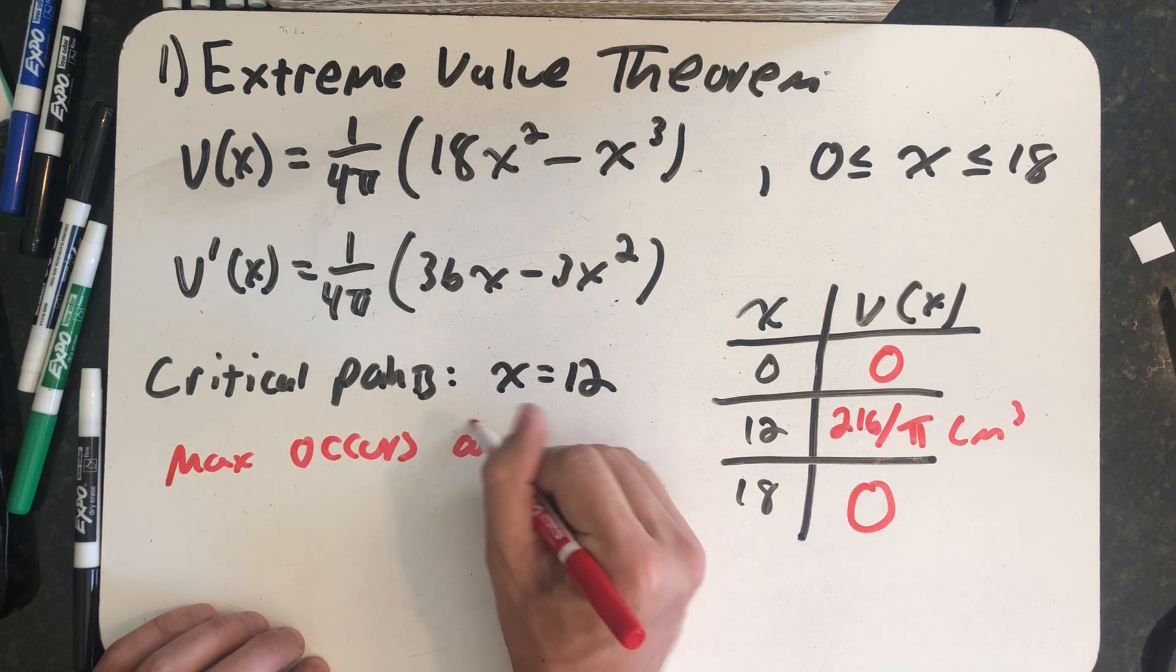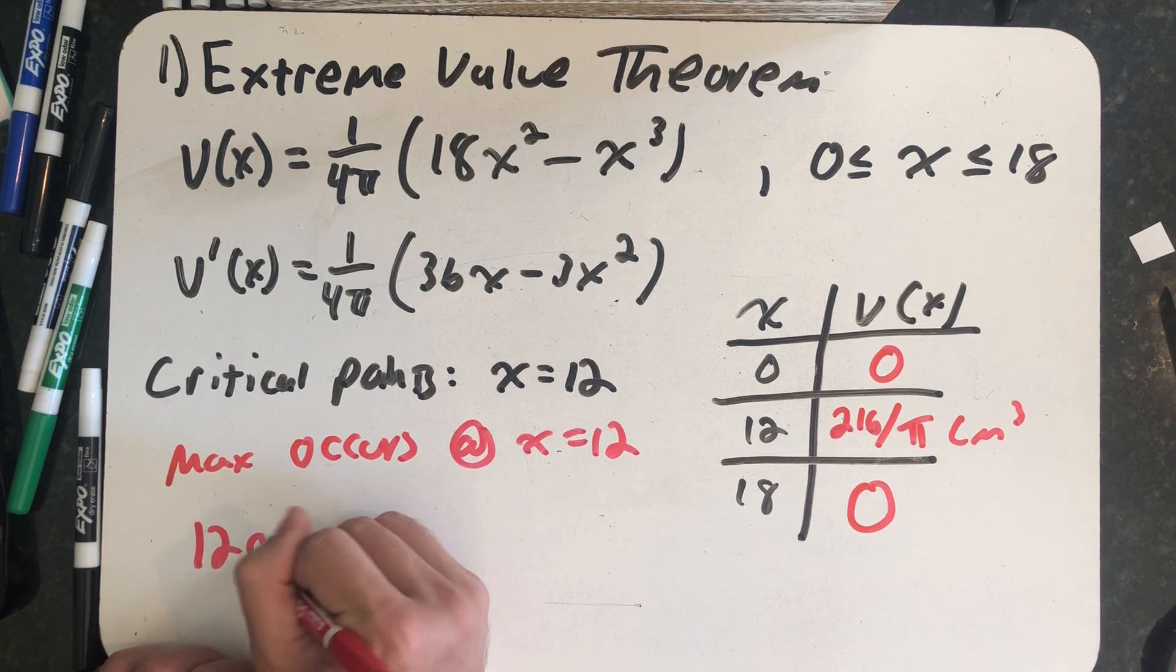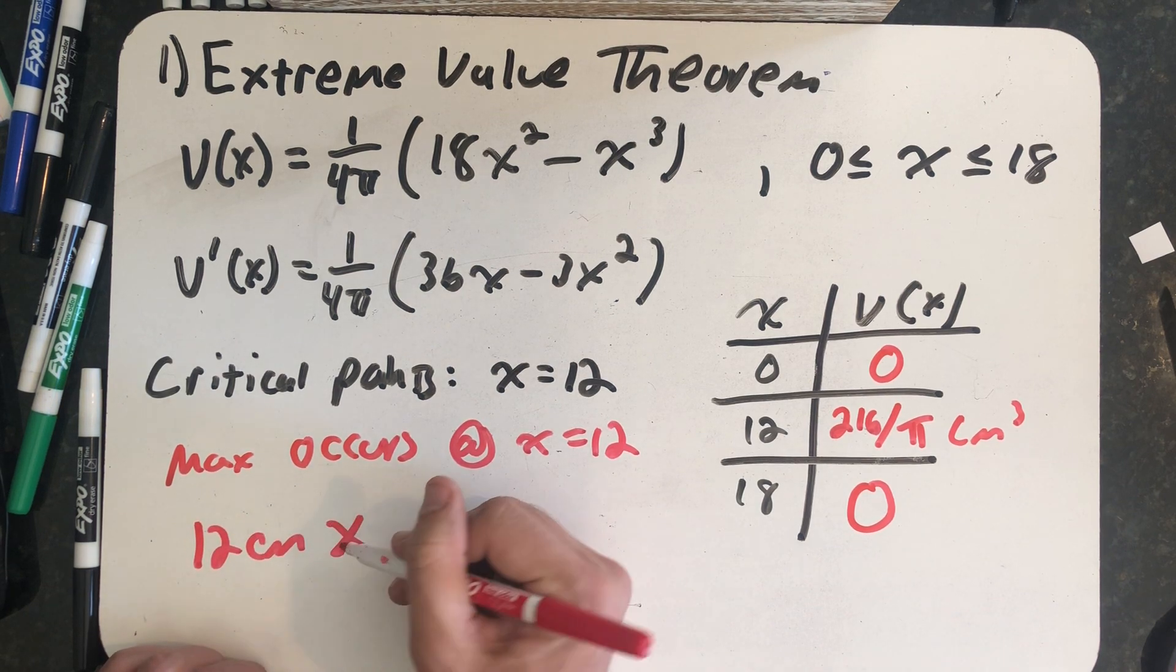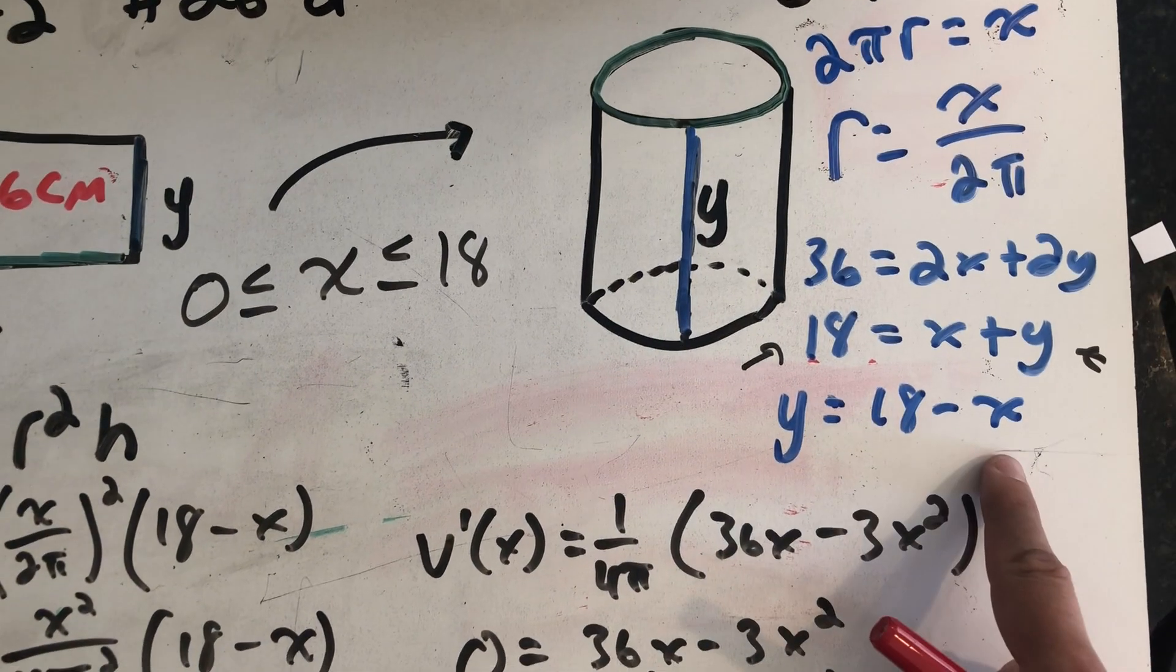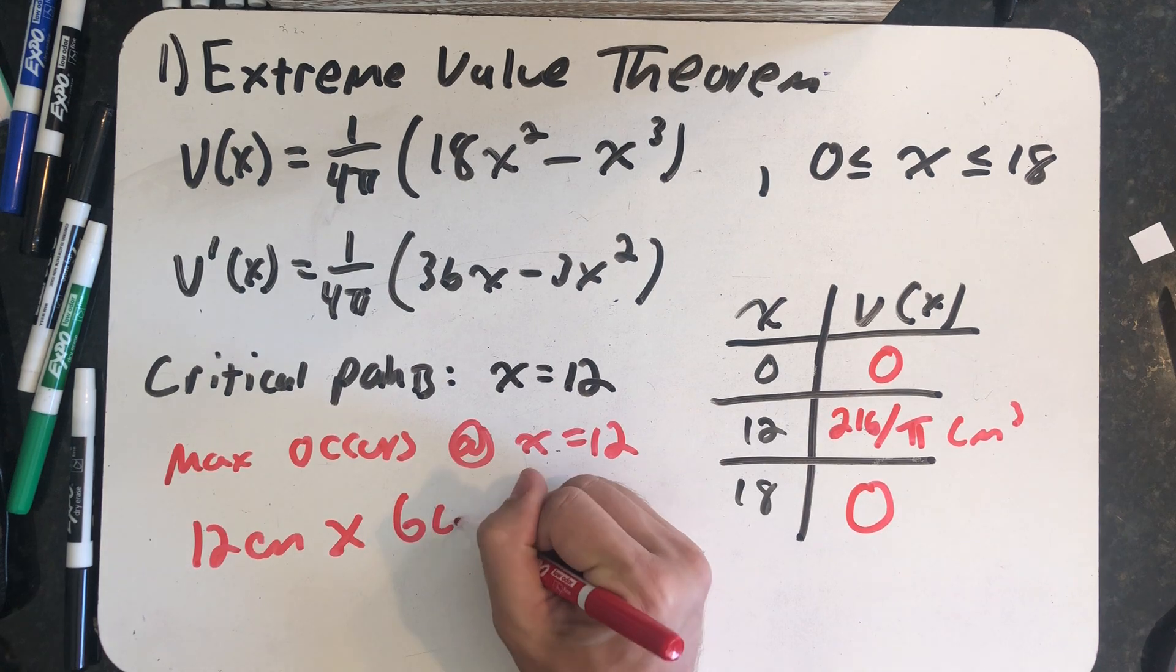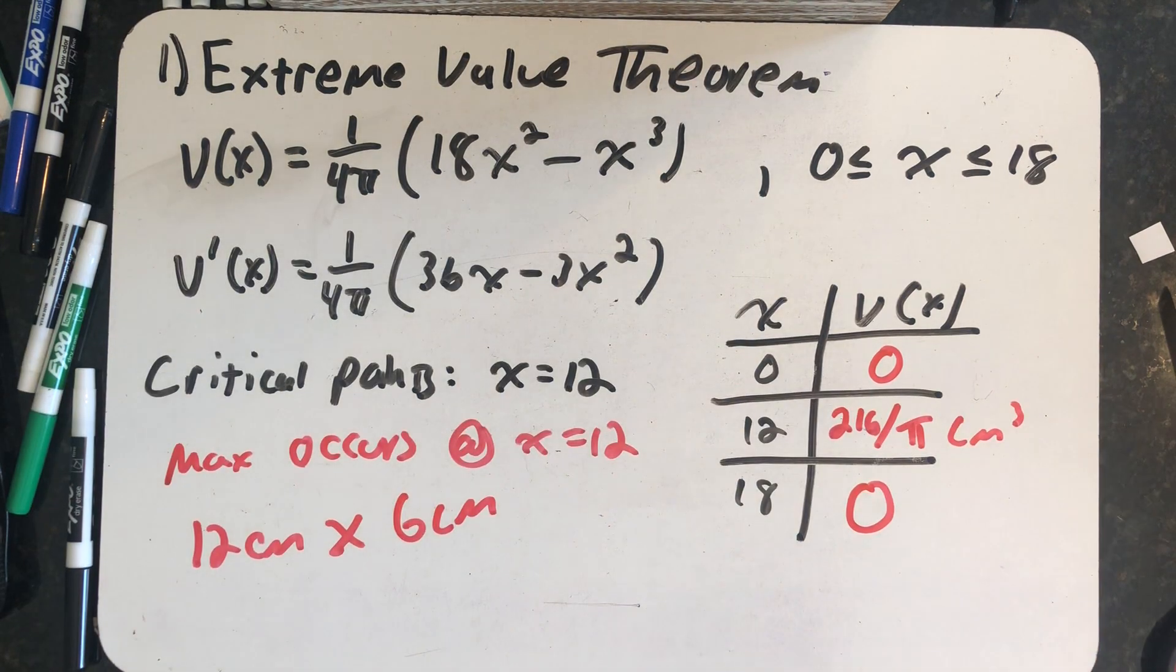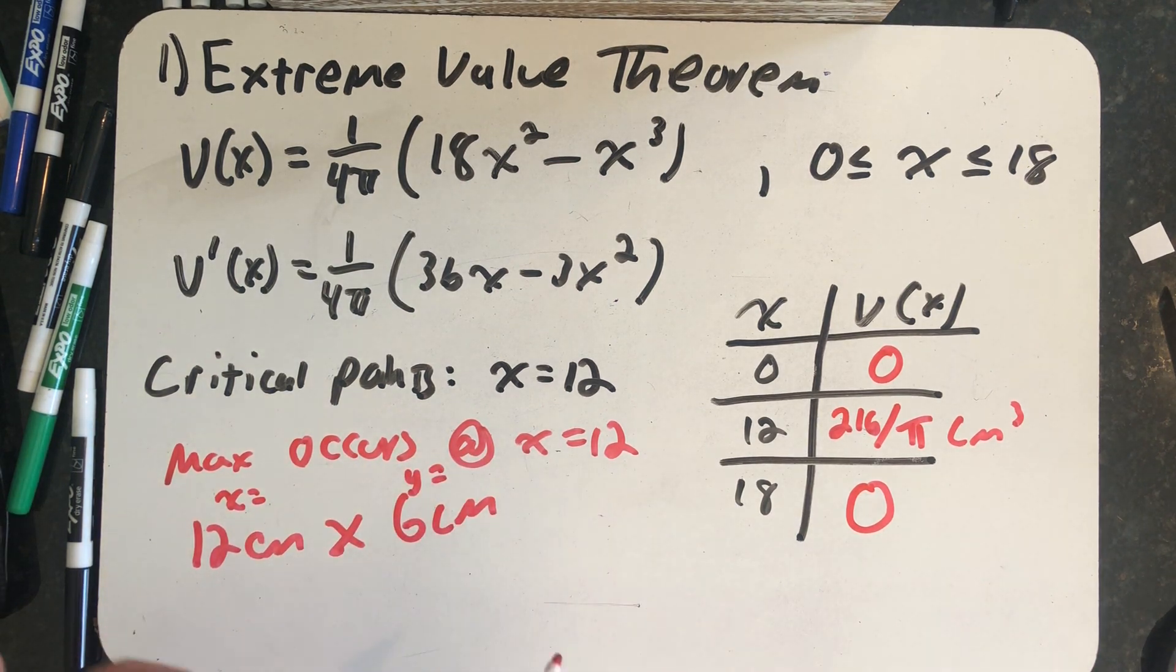The problem asked me for an x and a y. So I have a 12 centimeter x and my rectangle would have to be 12 centimeters by 18 minus 12 is 6 centimeters. So the dimensions that maximize my cylinder are x equals 12 by y equals 6 centimeters. And this would finish the problem if you were using the extreme value theorem.